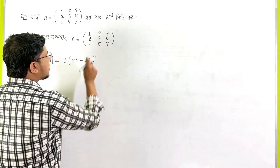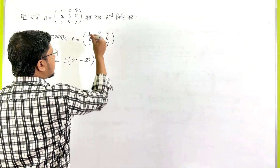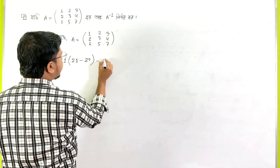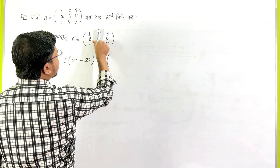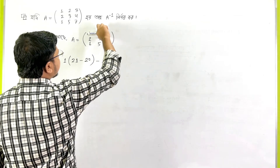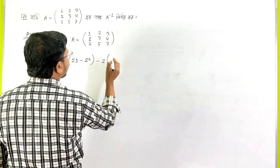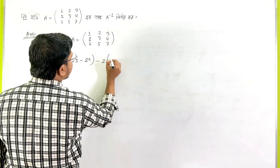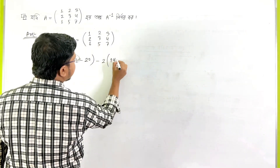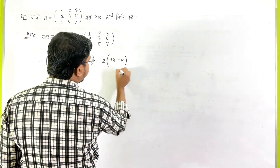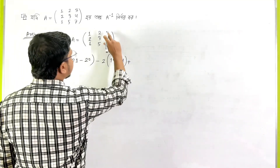First column is the first column. So, 2, 7, or 1, 4. So, 7, 2, 14 minus 4. So, 3.